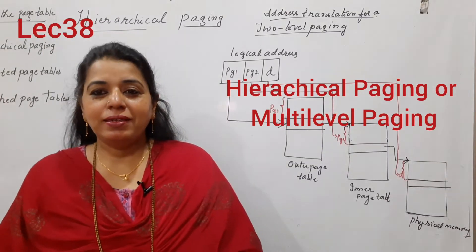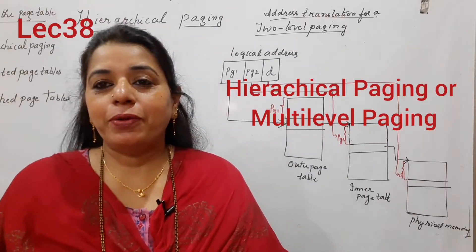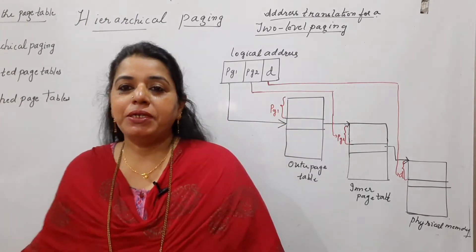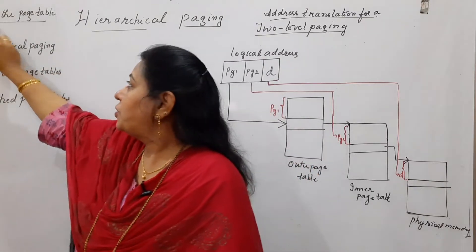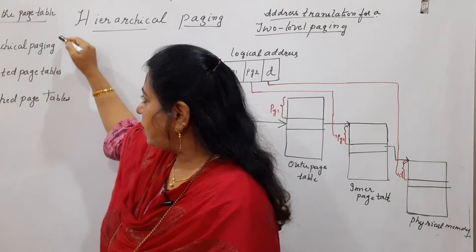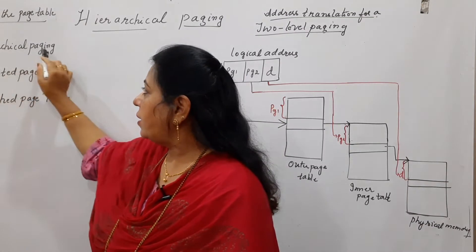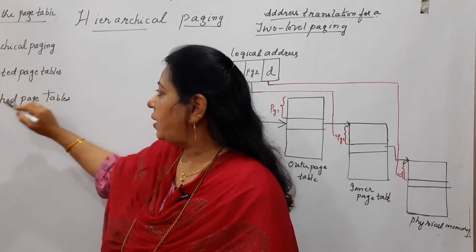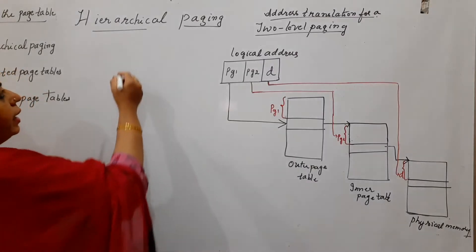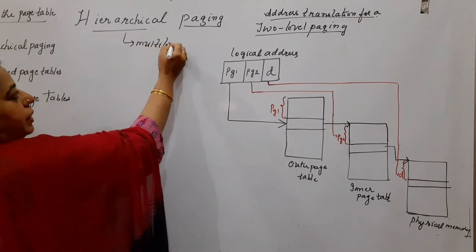Hello viewers, welcome back to my channel. In this session I shall be discussing the different types of page tables, also covered under the heading 'Structure of the Page Table' by Galvin. This author has given three different types: hierarchical paging, inverted page tables, and hashed page tables. Hierarchical paging is also given under the heading multi-level paging in some books.